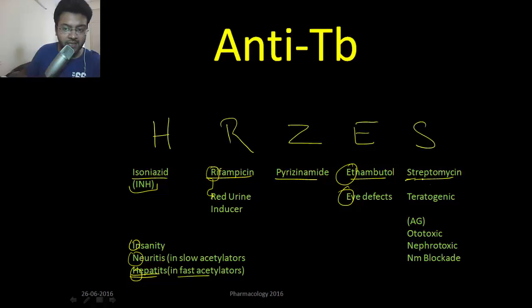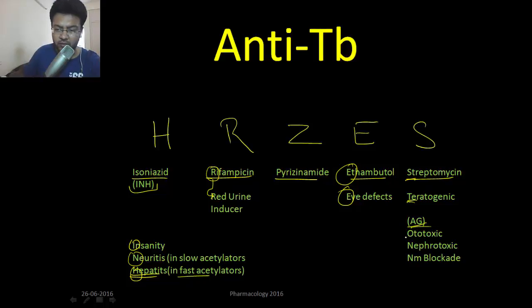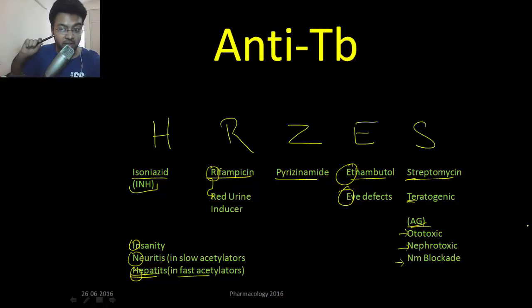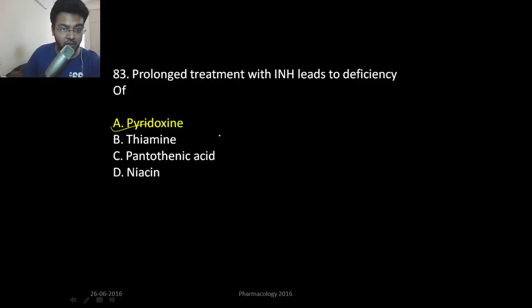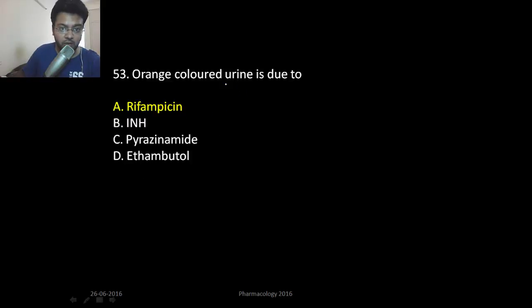The main side effect of ethambutol is eye defect. Streptomycin is teratogenic, so avoid it in pregnancy. Streptomycin is an aminoglycoside, and the main side effects of aminoglycosides are ototoxicity, nephrotoxicity, and neuromuscular blockade — so the child may be born deaf or with kidney problems. In summary: peripheral neuropathy occurs in slow acetylators; hepatotoxicity in fast acetylators, due to pyridoxine deficiency. Orange-colored urine is due to rifampicin.